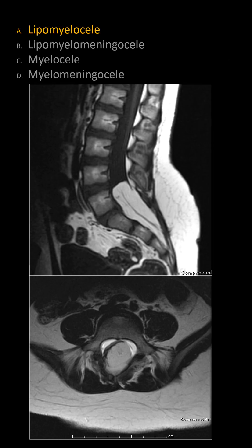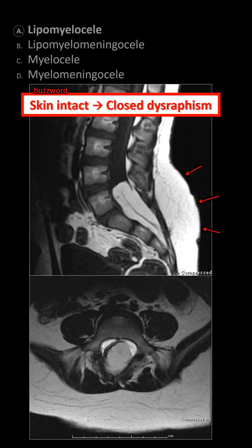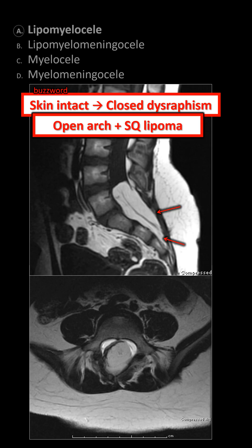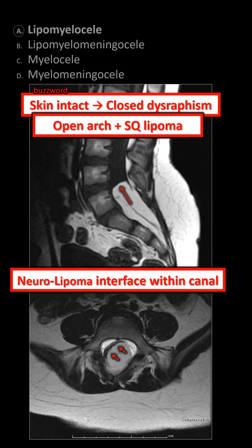Best choice is lipomyelocele. The key feature here is intact skin, so it's a closed dysraphism. You see a subcutaneous fatty mass extending into the spinal canal through a dorsal arch defect, and the neural-placode and lipoma interface is inside of the canal, making this a lipomyelocele.